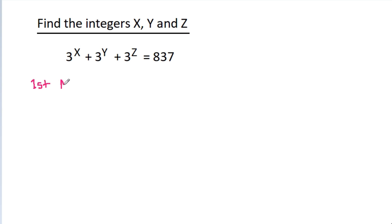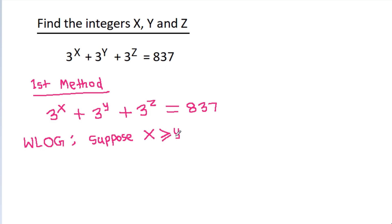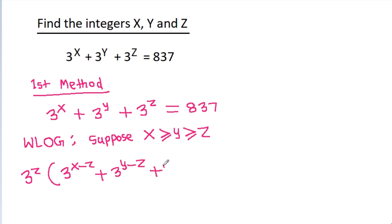First method. We have 3 power x plus 3 power y plus 3 power g is equal to 837. Without loss of generality, suppose x greater than or equal to y greater than or equal to g. Then we can take 3 power g common and it will be 3 power (x minus g) plus 3 power (y minus g) plus 1, equal to 837.